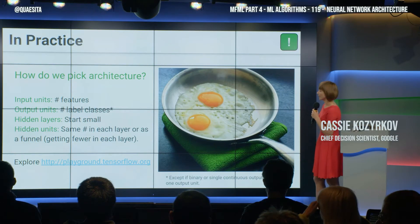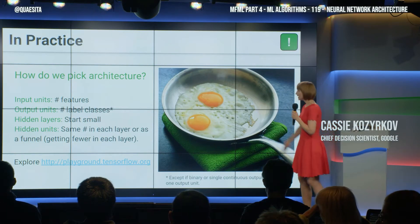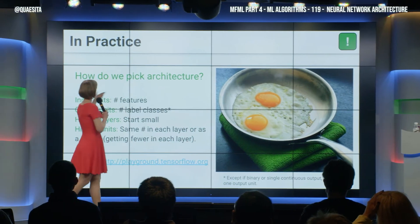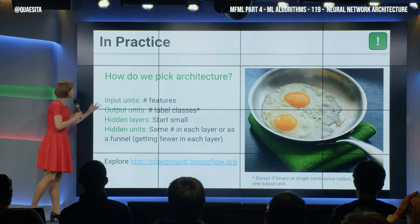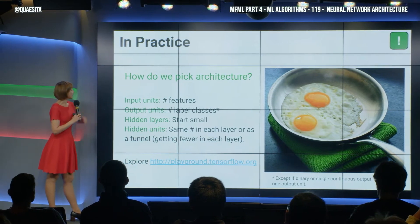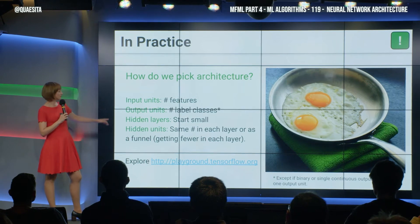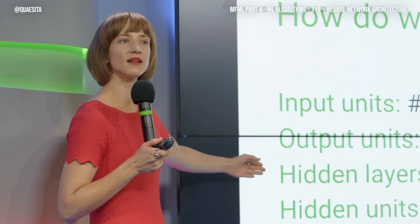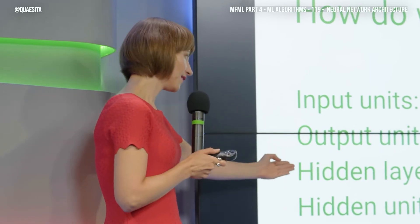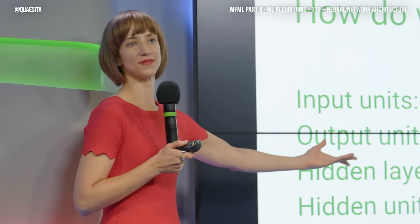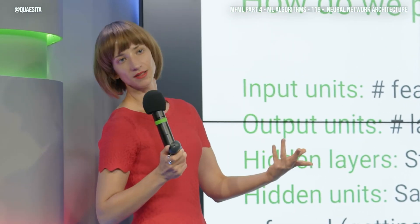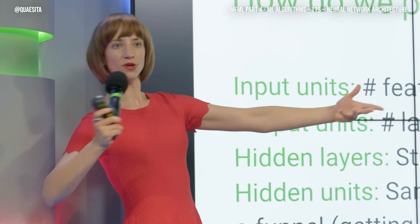How do we pick the architecture in practice? There's all kinds of advice out there on the internet — things like for input units, it's going to be your number of features; for output units, the number of label classes. For the hidden layers, start small. Why start small with the hidden layers? Overfitting. Even within this class of algorithms, fewer hidden layers is a simpler algorithm than more hidden layers.